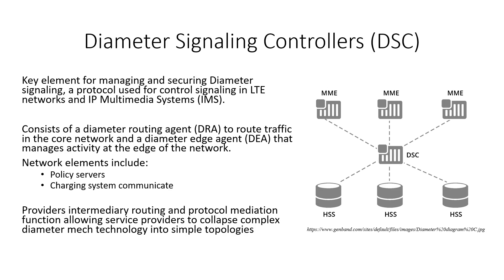A diameter signaling controller is a key element for managing and securing diameter signaling, a protocol for controlling signaling in LTE and IP multimedia systems. The diameter signaling controller consists of a diameter routing agent to route traffic in the core network and a diameter edge agent that manages activity at the edge of the network. Network elements include policy servers and charging system communication. It provides intermediary routing and protocol mediation functions, allowing service providers to collapse complex diameter mesh topology into simpler technologies. There is a diagram showing diameter signaling controllers with mobility management entities and home subscriber servers all connected to the diameter signaling controller.